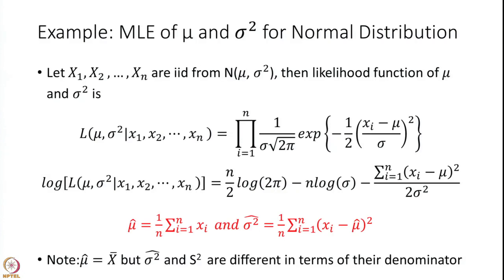Let us consider another example — a continuous distribution. We take a normal distribution with two unknown parameters: mean mu and variance sigma squared.